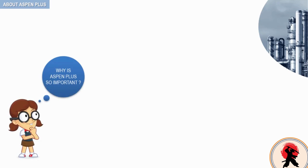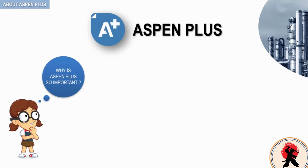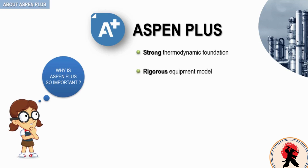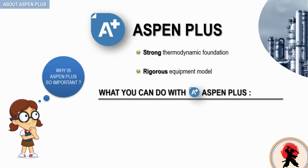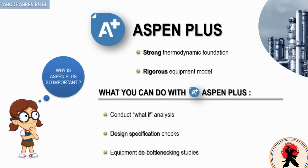Why is ASPEN PLUS so important? To comprehend why ASPEN PLUS is such an important and powerful engineering simulation software, you need to look no further than its strong thermodynamic foundation. With its reliable thermodynamic data and rigorous equipment models, ASPEN PLUS can simulate actual plant behavior. It enables you to run many tasks, such as conduct what-if analysis, design specification checks, carry out plant and equipment debottlenecking studies, perform sensitivity analysis, and run optimization investigations.